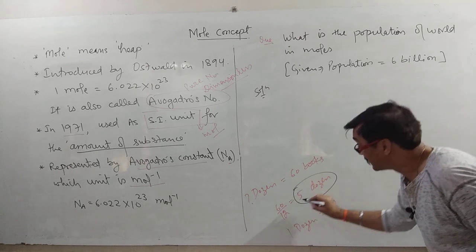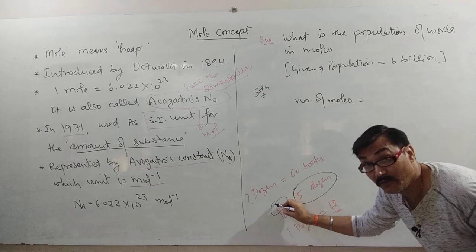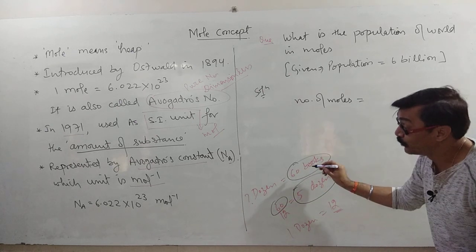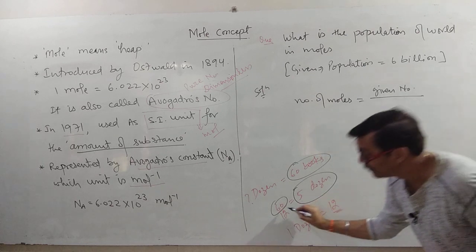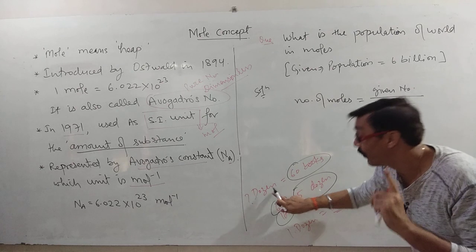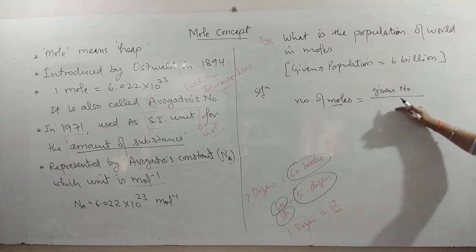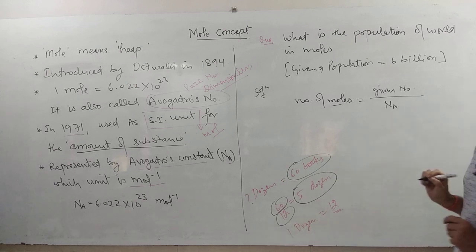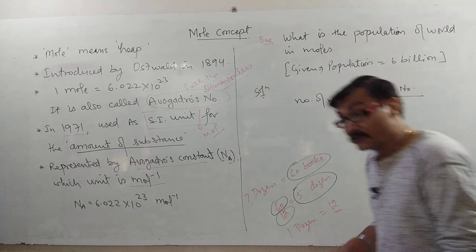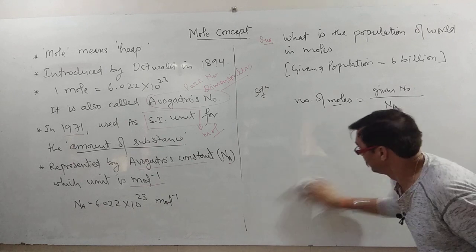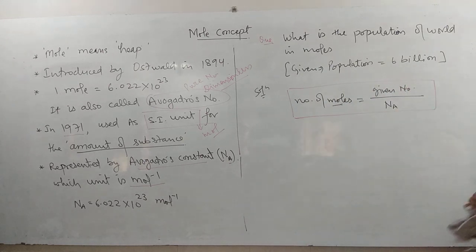Similarly, the number of moles equals the given number divided by Avogadro's number NA — just as we divided the given number of books by 12 to get dozens. To find the number of moles, use: number of moles equals given number divided by NA, that is 6.022 into 10 to the power 23. This is the formula to use in such questions.